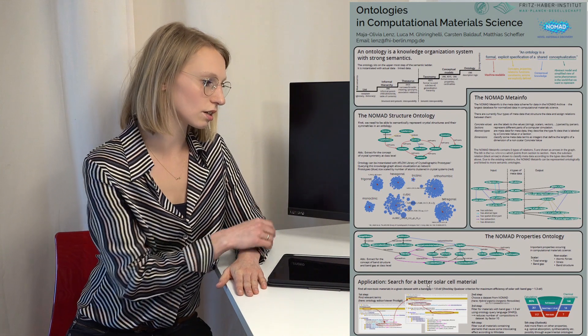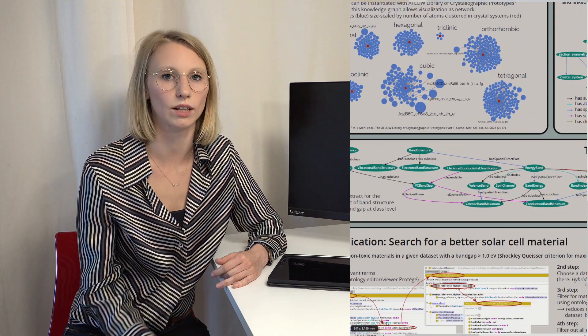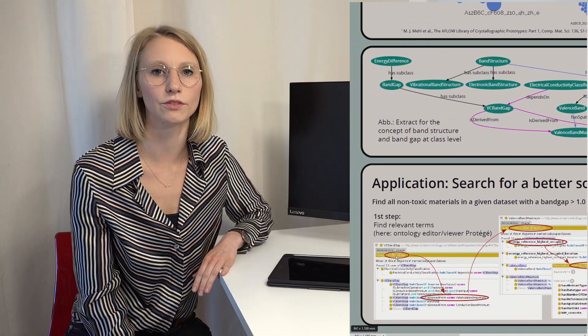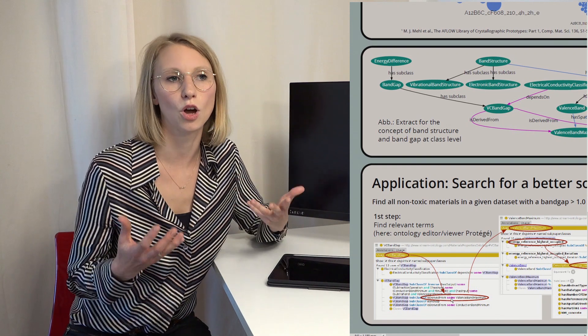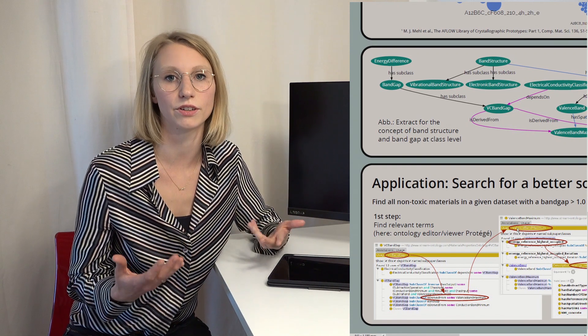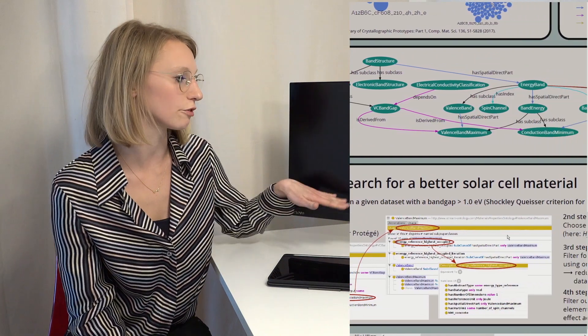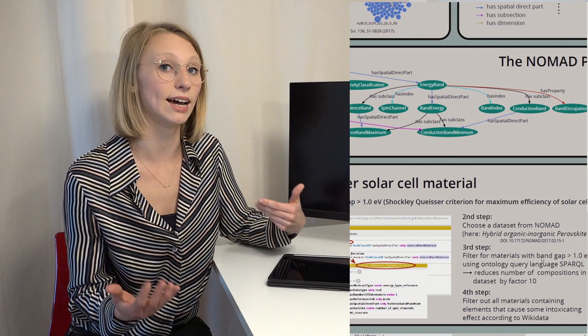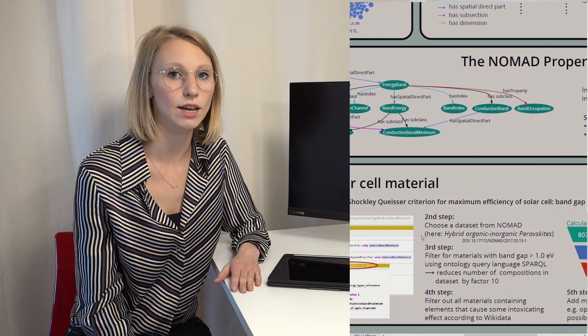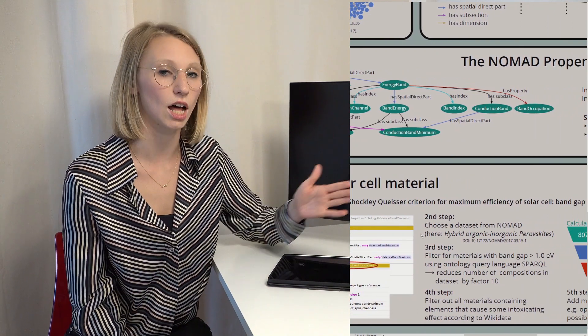Now we want to connect these three ontologies, and I show you how this can be used as an application to search for a better solar cell material. Let's assume we have a dataset and we want to find all materials that have a band gap of larger than one electron volt. According to the Shockley-Queisser criterion, the maximum efficiency of a solar cell is at a band gap of 1.3 electron volts. We first need to find the relevant terms in the ontologies, then choose a dataset and download it from the Nomad Archive and instantiate the Nomad Metainfo ontology with it.